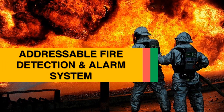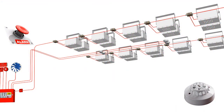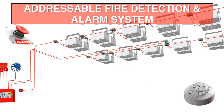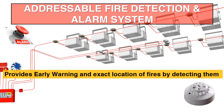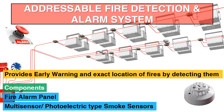Moving to the next module: addressable fire detection and alarm system. This system provides early warning and exact location of fires by detecting them at an early stage so that effective countermeasures like evacuation of persons or automatic activation of fire extinguishing systems can be achieved. The fire alarm system can also be used for tripping off HVAC systems and actuating fire dampers to prevent spreading of fire to unaffected areas. The system consists of components including a fire alarm panel and multi-sensor photoelectric type smoke detectors.